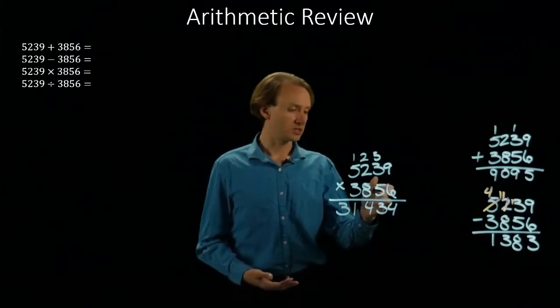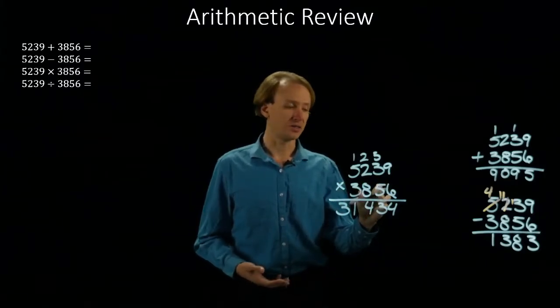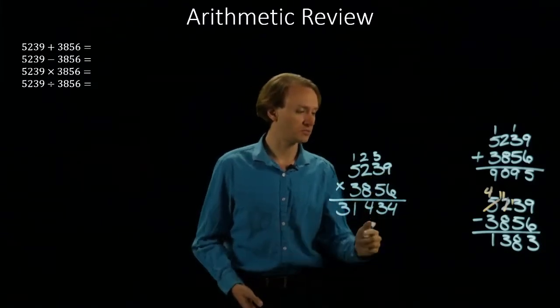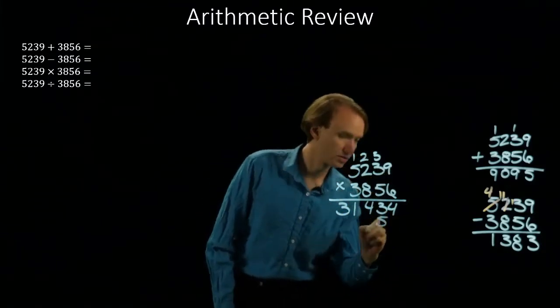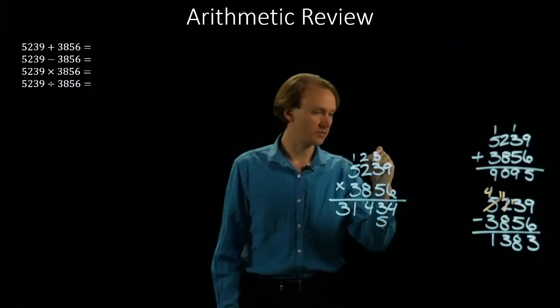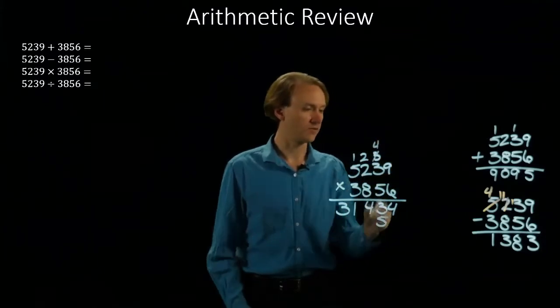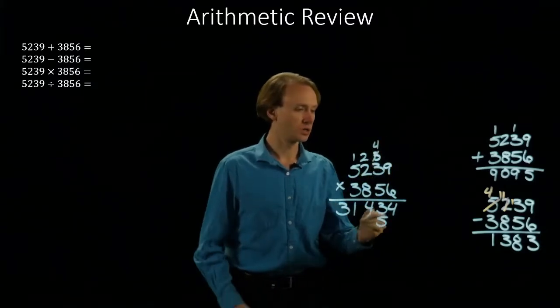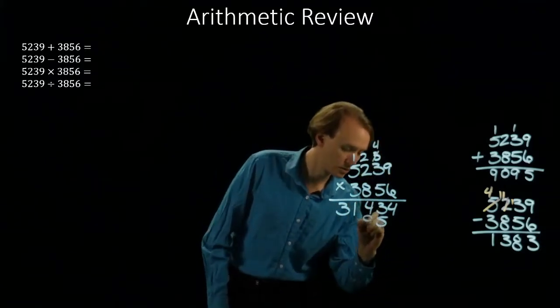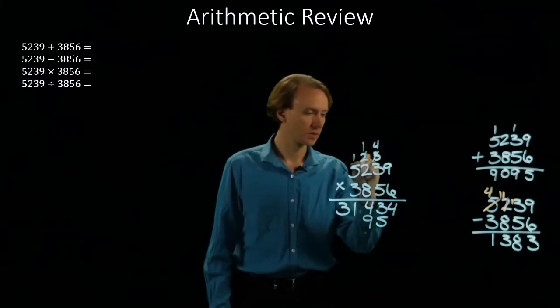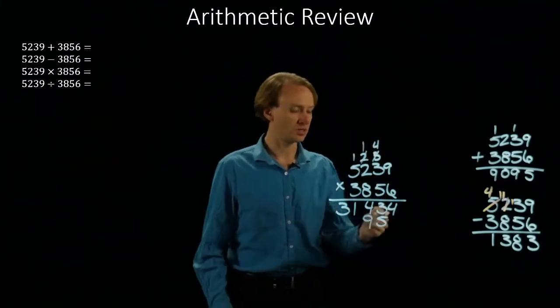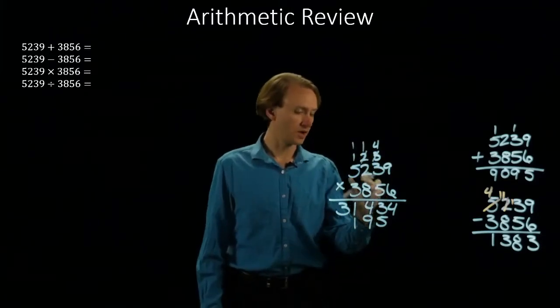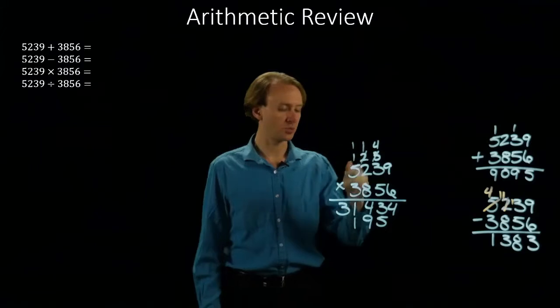Now I'll do the same process again, but this time I'll be looking at the 5, multiplying it by everything on top. So 5 times 9 is 45. So I don't need this 5 anymore. I'm going to have a 4 that I carried. 5 times 3 is 15, plus 4 is 19. 5 times 2 is 10, plus 1 is 11. 5 times 5 is 25, plus 1 is 26.